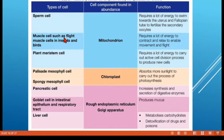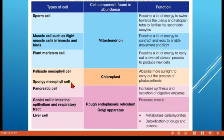Similarly, flight muscle cells in insects and birds contain many mitochondria because flying requires a lot of energy. Palisade mesophyll cells and spongy mesophyll cells function in photosynthesis, so what is found in abundance in these cells is chloroplasts — because chloroplasts contain chlorophyll, which absorbs sunlight to carry out photosynthesis.